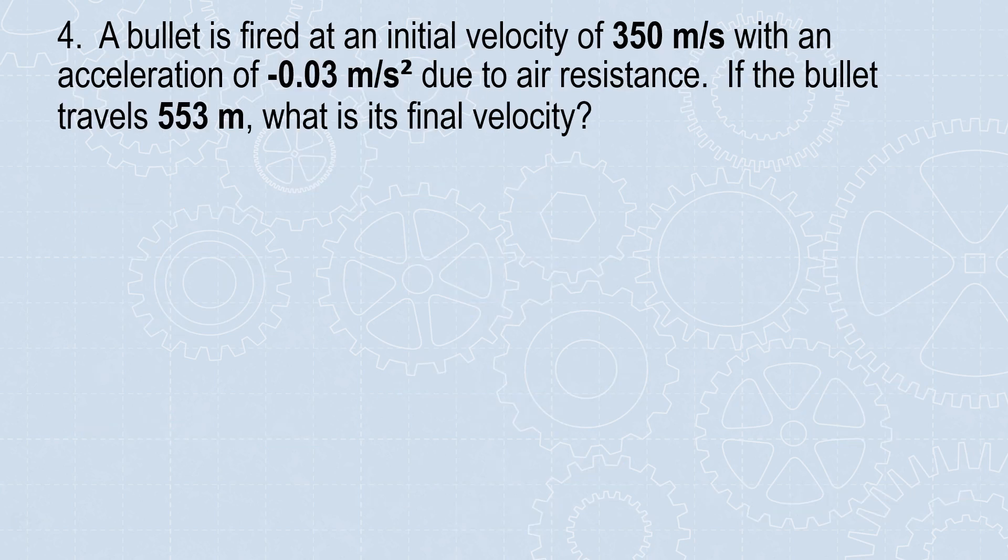Question 4: A bullet is fired with an initial velocity of 350 meters per second, with an acceleration of negative 0.03 meters per second squared due to air resistance. If the bullet travels 553 meters, what is its final velocity?